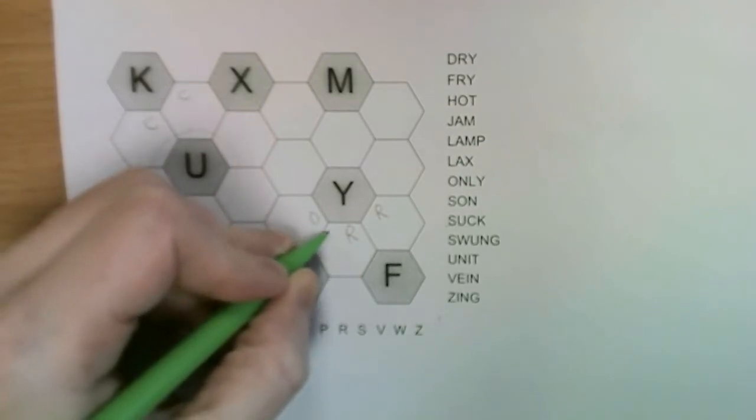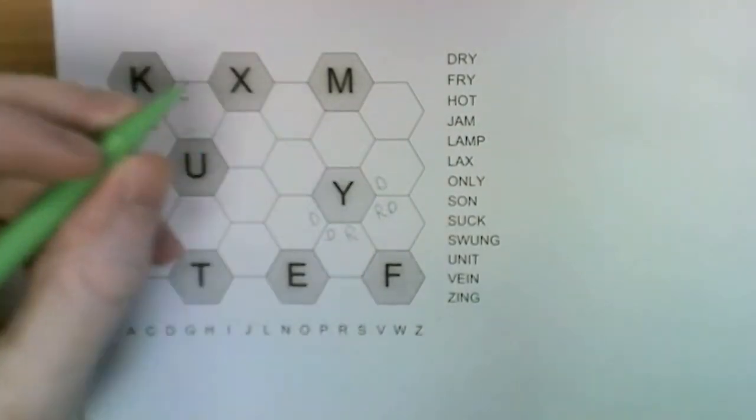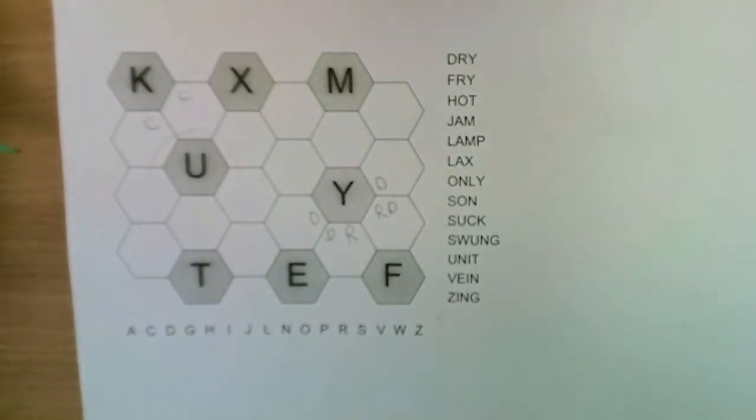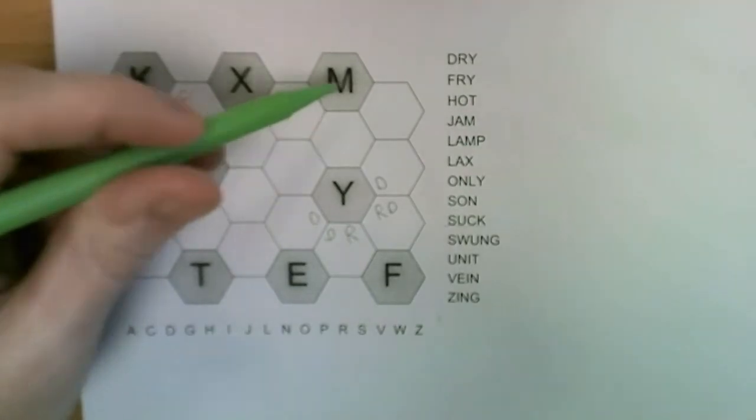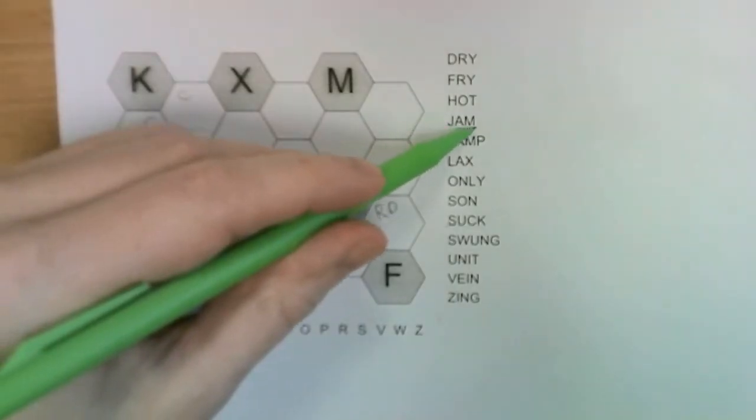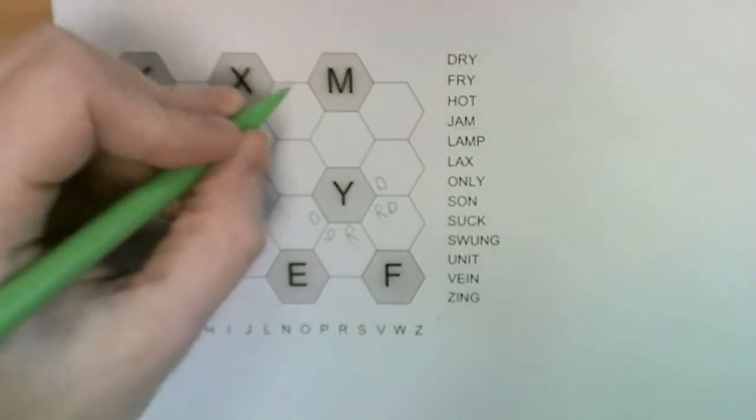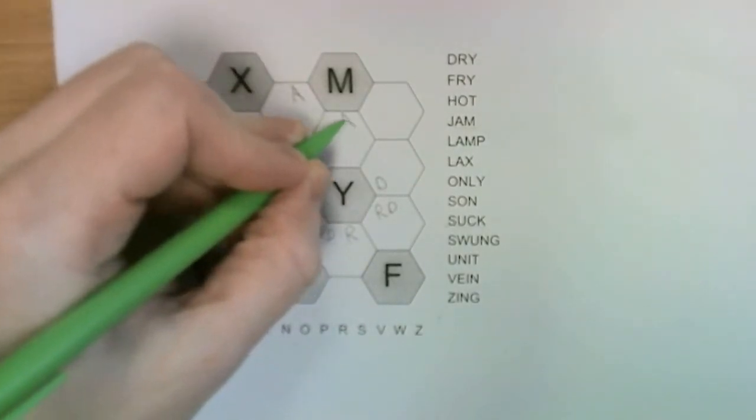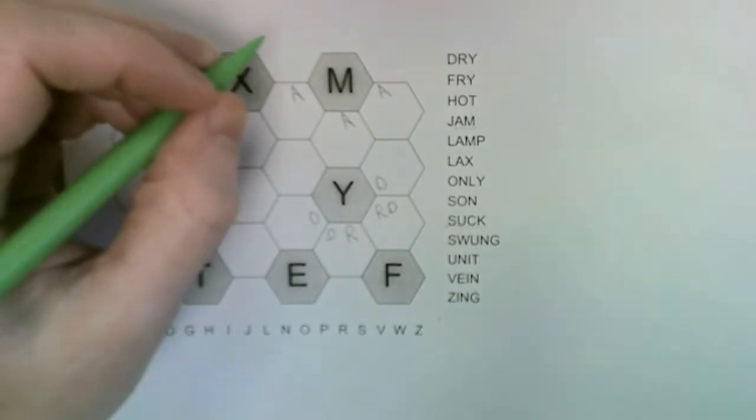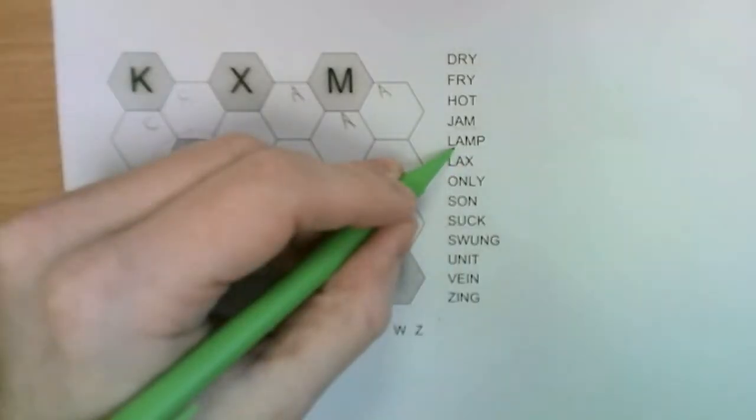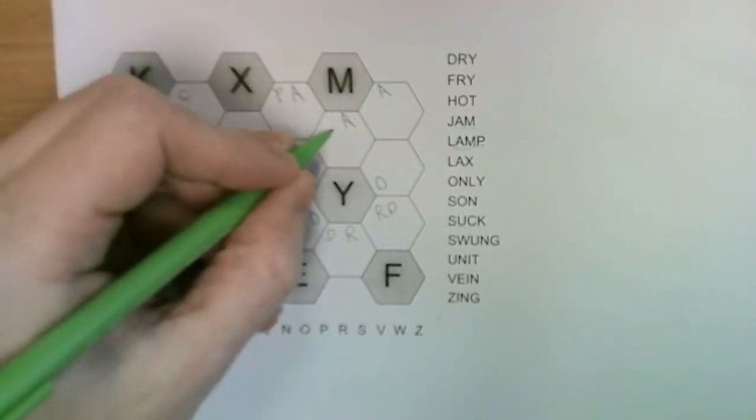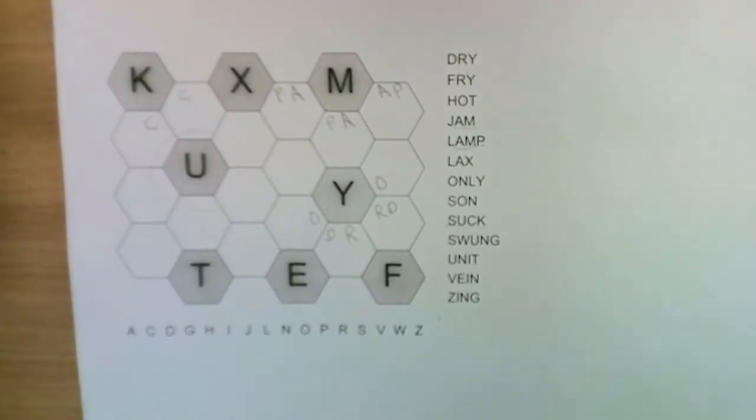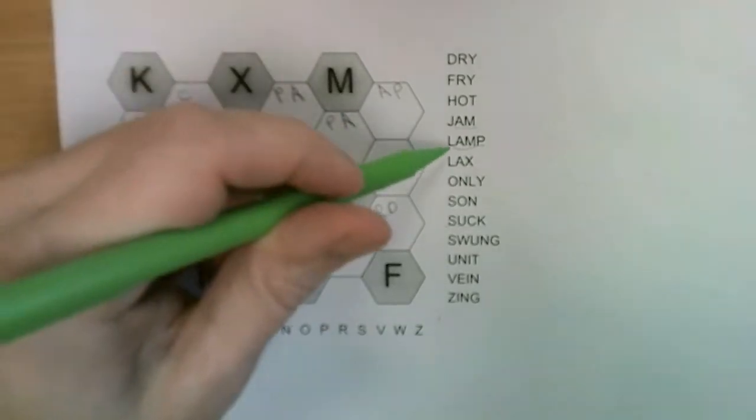Let's have a look at the M up here. So it borders an A, so the A must go in one of these squares, and it also borders the P, so the P must also go in one of those squares.